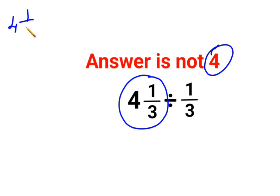So the first job is to convert this mixed fraction into its improper form. How do I do it? The denominator remains the same, but in your numerator, the denominator gets multiplied to the integer part, which is 4.